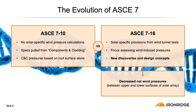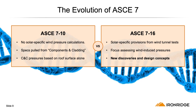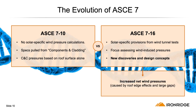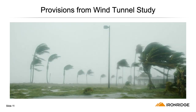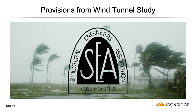One new discovery to come about is the observation of decreased wind pressures between the upper and lower surfaces of the solar array. Another discovery being the observation of increased wind pressures caused by roof edges and large gaps on the roof. ASCE 716 has new solar-specific provisions that come from wind tunnel testing. The Structural Engineers Association of California have various resources and PV-2 reports available for those who want to dig into the details.